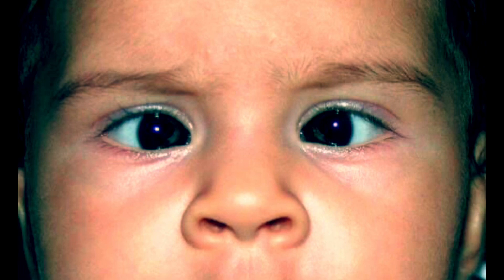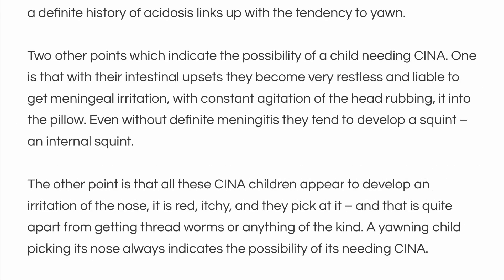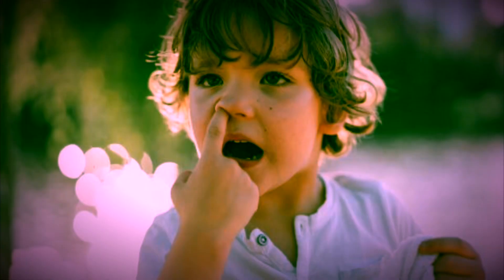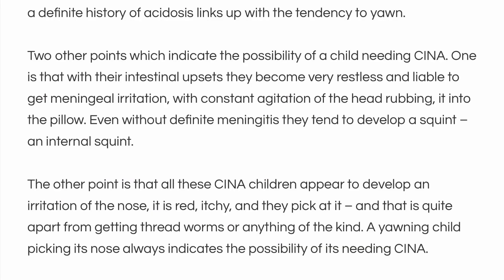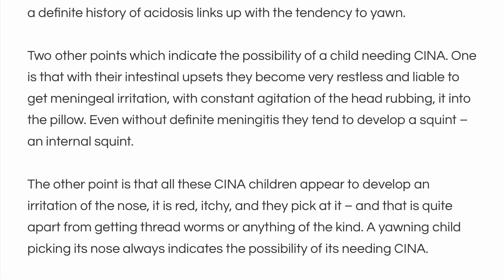The other point is that all Sina children appear to develop an irritation of the nose — it is red, itchy, and they pick at it, quite apart from getting threadworms or anything of that kind. A yawning child picking its nose always indicates the possibility of its needing Sina.